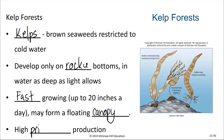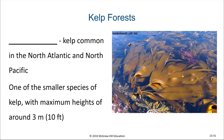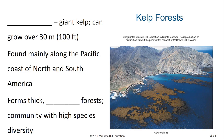In the North Atlantic the most common species of kelp are in the genus Laminaria, which is one of the smaller species of kelp with maximum heights of around 3 meters. On the Pacific coast of North and South America, the most common kelp is the giant kelp, Macrocystis. They can form thick, complex forests with very high species diversity. Some of these Macrocystis can grow over 30 meters in length.